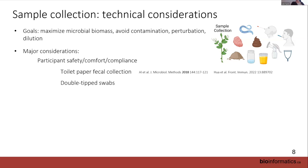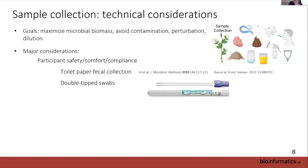For swab samples — vaginal, respiratory, and oral — a simple way to get more biomass is to use a double-tip swab. The participant doesn't have to do anything extra. We found foam swabs work best for us. With double-tip foam swabs, we get twice the biomass and can split them immediately — treating one with protease inhibitors for proteomics work while keeping the other pristine for DNA. Simple hacks can keep participant burden down while giving you more material.